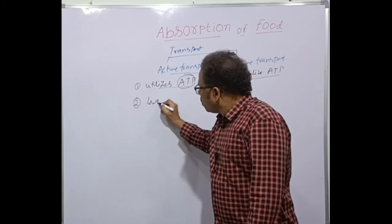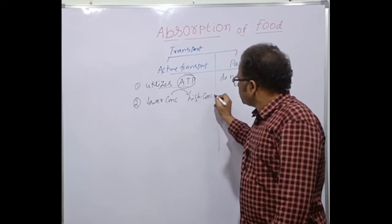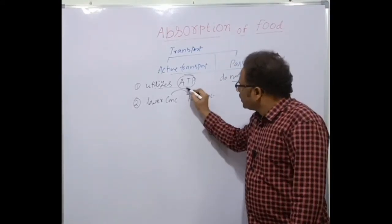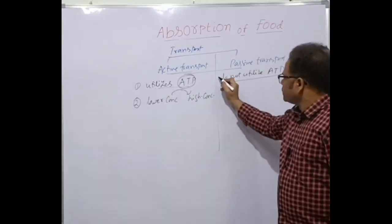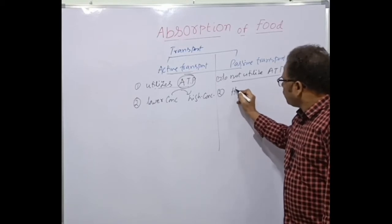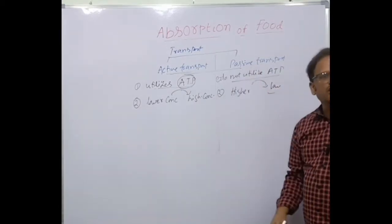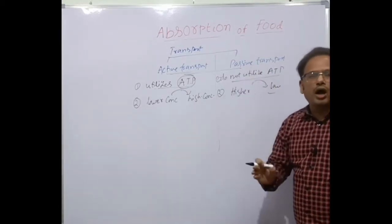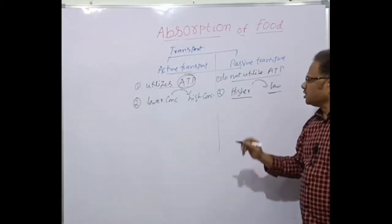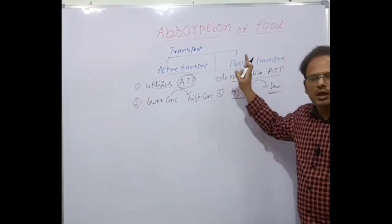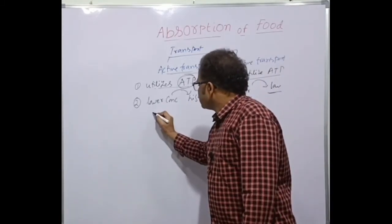Active transport moves particles from the region of lower concentration to higher concentration, by utilizing energy in the form of ATP. In passive transport, particles move from the region of higher to lower concentration, because they do not utilize ATP. Such movement of food particles from higher to lower concentration without energy is called passive transport.